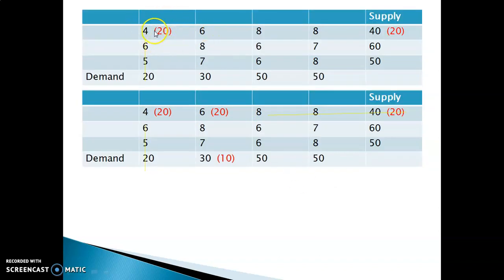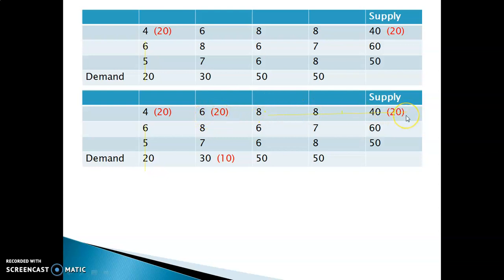The uppermost left corner cell has a cost of 4. You allot the minimum of supply and demand. The demand here is 20 and supply is 40, so I can allocate only 20 units. The demand for this warehouse is satisfied. The remaining supply from F1 is 20. In the next step, the next leftmost corner has cost 6. Supply remaining is 20 and demand is 30, so I allot 20 units. This satisfies the supply. But demand still needs 10 more units. In the next step, the next leftmost corner has cost 8. Demand is 10 and supply is 60, so I allot 10 units. This warehouse demand is satisfied, and 50 remains from F2's supply.